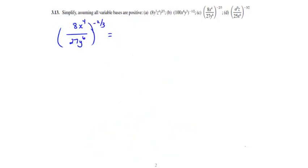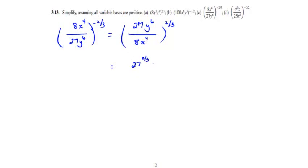For Part C, we proceed the same way. The first thing we do is remove the negative exponent by taking the reciprocal of the base. So the problem simplifies first into 27y to the 6th over 8x to the 4th, all raised to the 2/3 power. Everything gets raised to the 2/3 power, so this becomes 27 to the 2/3, times y to the 6th to the 2/3 power, all over 8 to the 2/3, times x to the 4th to the 2/3 power.